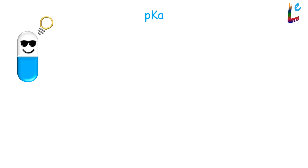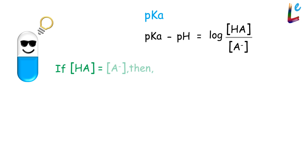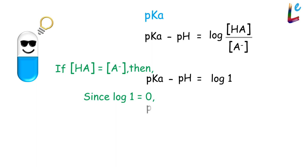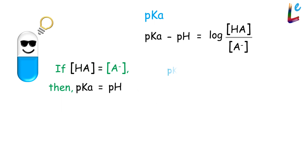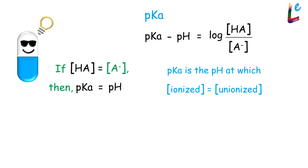Let's try to simplify pKa. In the Henderson-Hasselbalch equation, if the unionized fraction is equal to the ionized fraction, then pKa − pH will be equal to log 1. We know log 1 is equal to 0, so pKa − pH will be 0 — that is, pKa is equal to pH. Thus, pKa can also be defined as the pH at which the fractions of the ionized and unionized forms are equal, or pKa is the pH at which the drug is half-ionized.